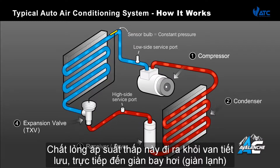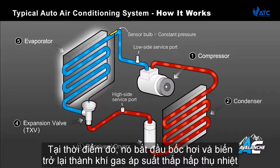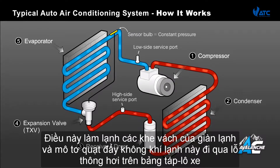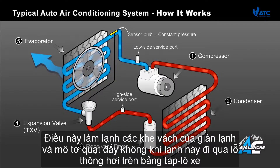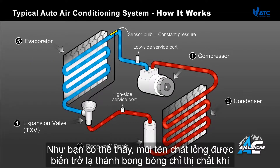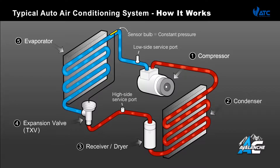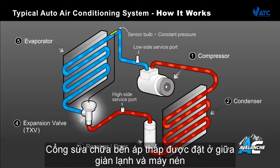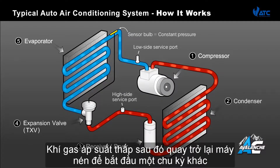This low pressure liquid flows from the expansion valve directly into the evaporator, at which point it begins to boil and turn back into a low pressure gas, absorbing heat as it does so. This chills the walls of the evaporator, and the blower motor pushes this cool air through the vehicle's dashboard vents. The liquid arrows turn back into a gas as indicated by bubbles. The low side service port is located here, between the expansion valve and compressor. The low pressure gas then returns to the compressor for another cycle.